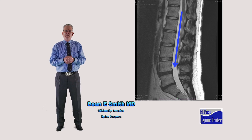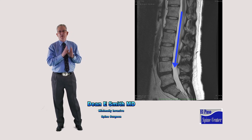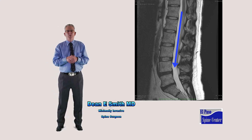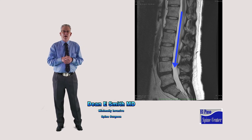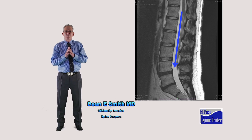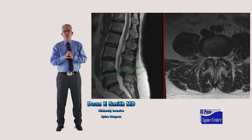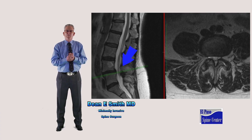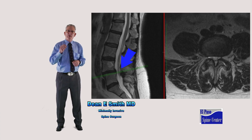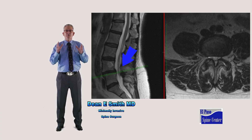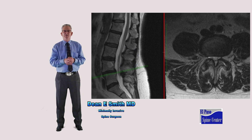Here we see the lumbar spine from the side. All of the bones line up, meaning there is sufficient space for the spinal cord. Here you see where one bone has slipped on the other bone. It's obvious that at this point the spinal cord is being pinched. This slippage is called a spondylolisthesis.